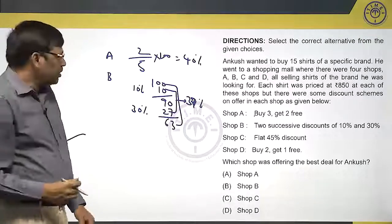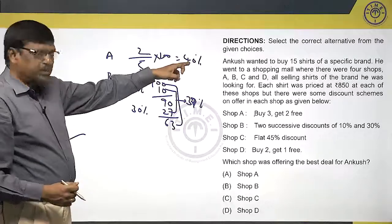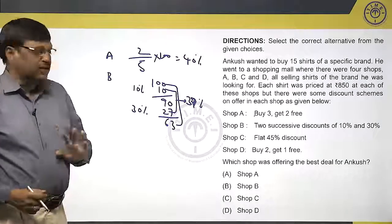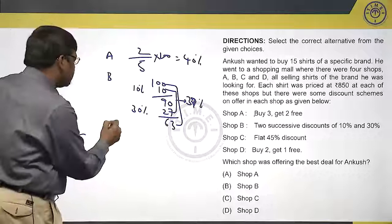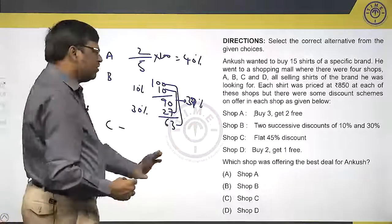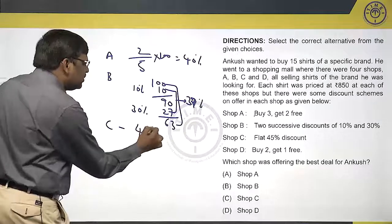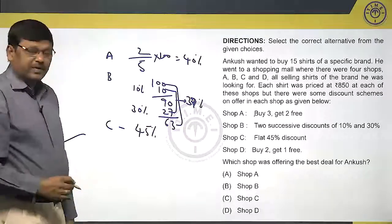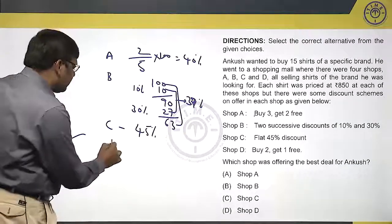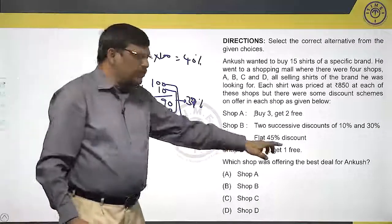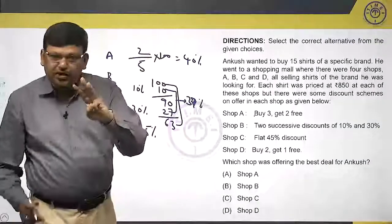He is paying 63 rupees. For 100 rupees he is paying 63 means how much discount he got? 37 per 100, 37 per 100 or 37%. You can see this 10 and 27 is also 37. So he is getting 40% discount from A, 37% from Shop B.